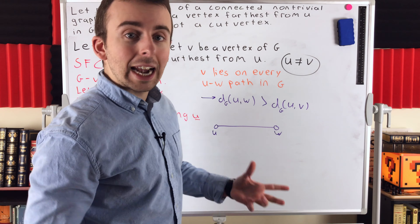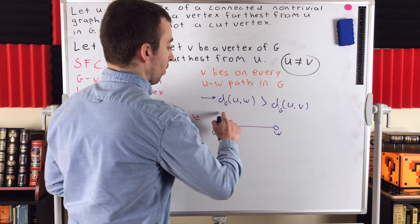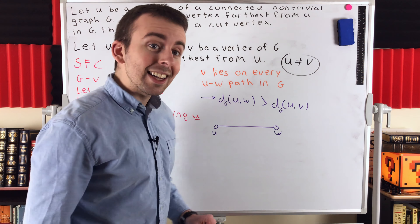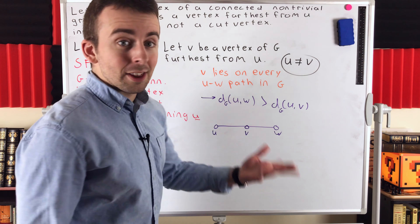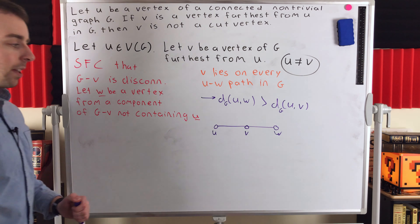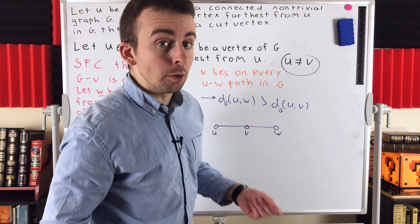Just to explain a little bit more about why this is true: suppose that we've got a u-w geodesic — that is, a shortest path connecting u and w, so the length of this path is the distance from u to w. We know that v lies on every u-w path in g, so v is somewhere on this geodesic. Of course, we know that w is not the vertex v because w exists in g minus v. Now this part of the geodesic from u to v has to also be a u-v geodesic. So the length from u to v is the shortest possible way to get from u to v — it's the distance from u to v — and so it's clearly shorter than the distance from u to w. So the distance from u to w is greater than the distance from u to v.